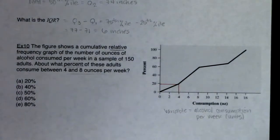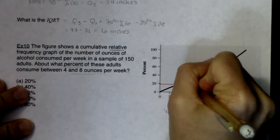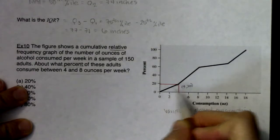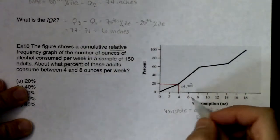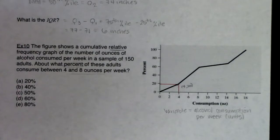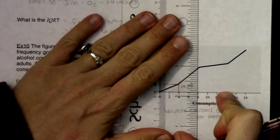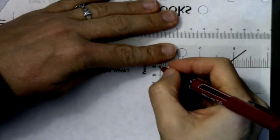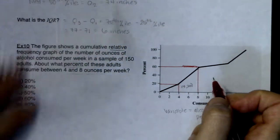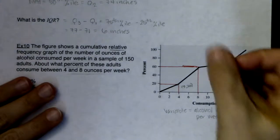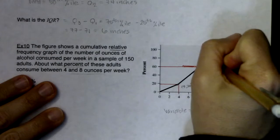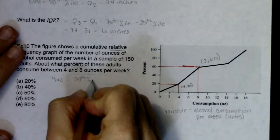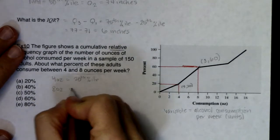The ordered pair (4, 20) means 20 percent of adults consumed four ounces of alcohol or less per week. Now let's find the y-value at x = 8. That looks like it's hitting at 60 — so the ordered pair is (8, 60). Four ounces is the 20th percentile; eight ounces is the 60th percentile. So 60 percent of adults consumed eight ounces or less per week.